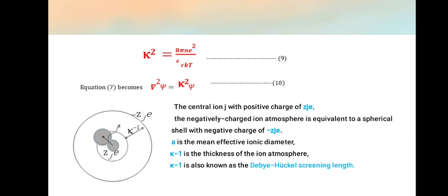The central ion with positive charge of Zje, and A is the mean effective ionic diameter. κ⁻¹ is the thickness of the ion atmosphere with anions whose charge is -Zje.